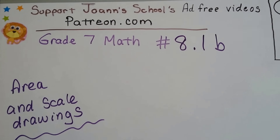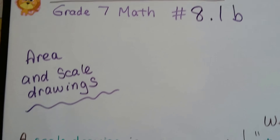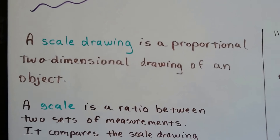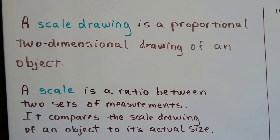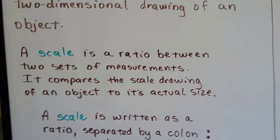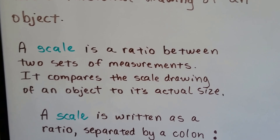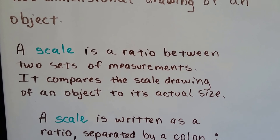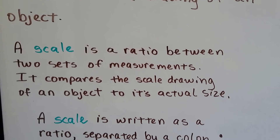Grade 7 math, number 8.1b: Area and Scale Drawings. As we discussed in the last video, a scale drawing is a proportional two-dimensional drawing of an object. A scale is a ratio between two sets of measurements. It compares the scale drawing of an object to its actual size.